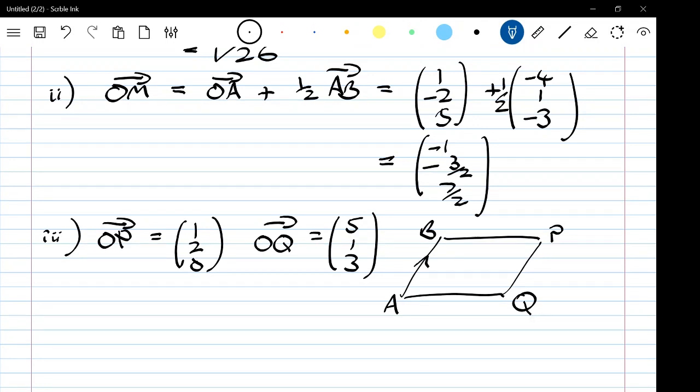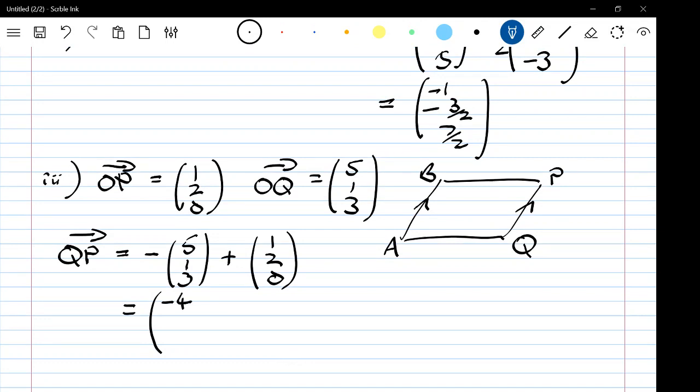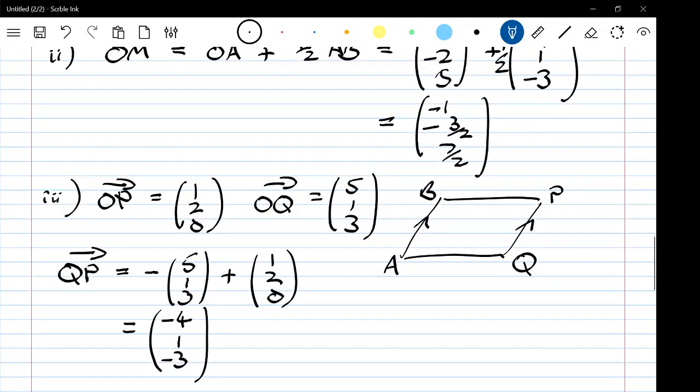I've got the vector AB plus QP, so that is the vector (-5 + 1, that's -4, 1, -3). Ah brilliant! So what I've got from that is that QP is exactly the same vector as the vector AB.